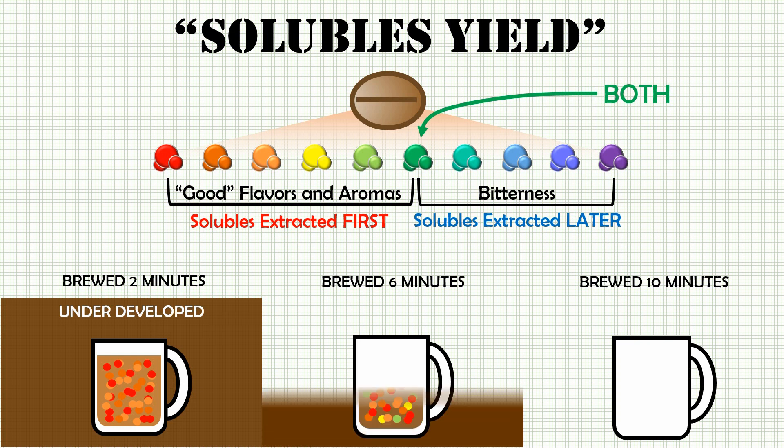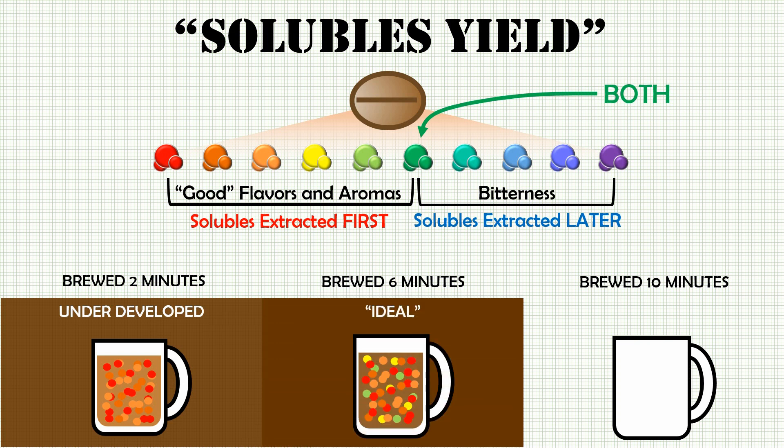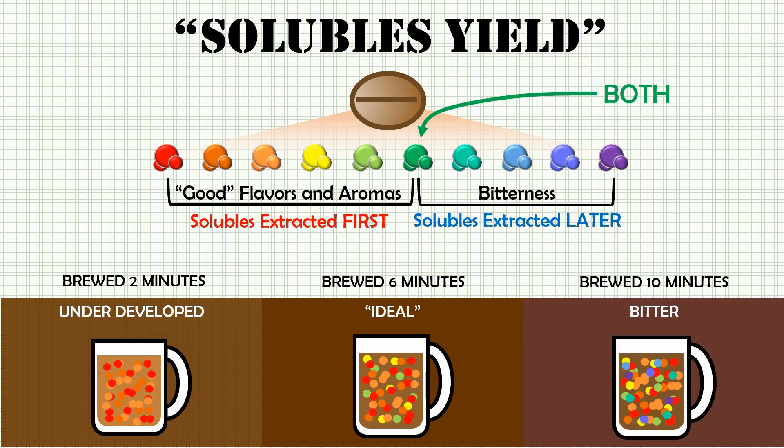The coffee brewed for six minutes, on the other hand, is what we would call an ideal brew. It has the full range of good flavors and aromas to give you a nice cup of coffee. Finally, our third cup brewed for ten minutes was exposed to the water for too long. Now we're getting the blues and the purples, bringing in the bitterness that we did not want, and ending up with a bitter cup of coffee.